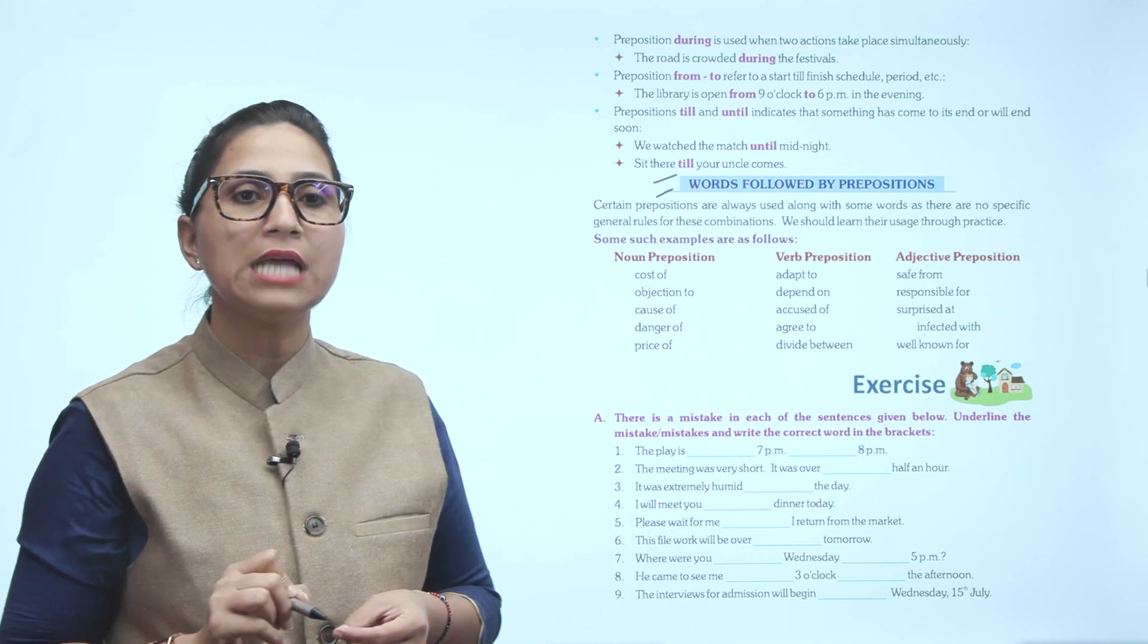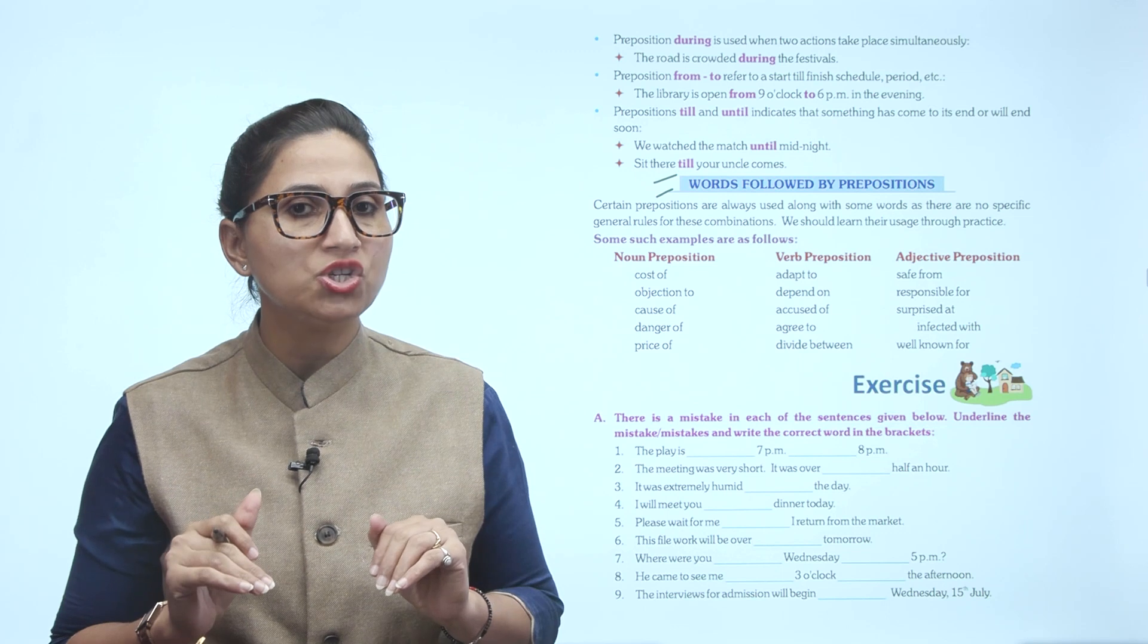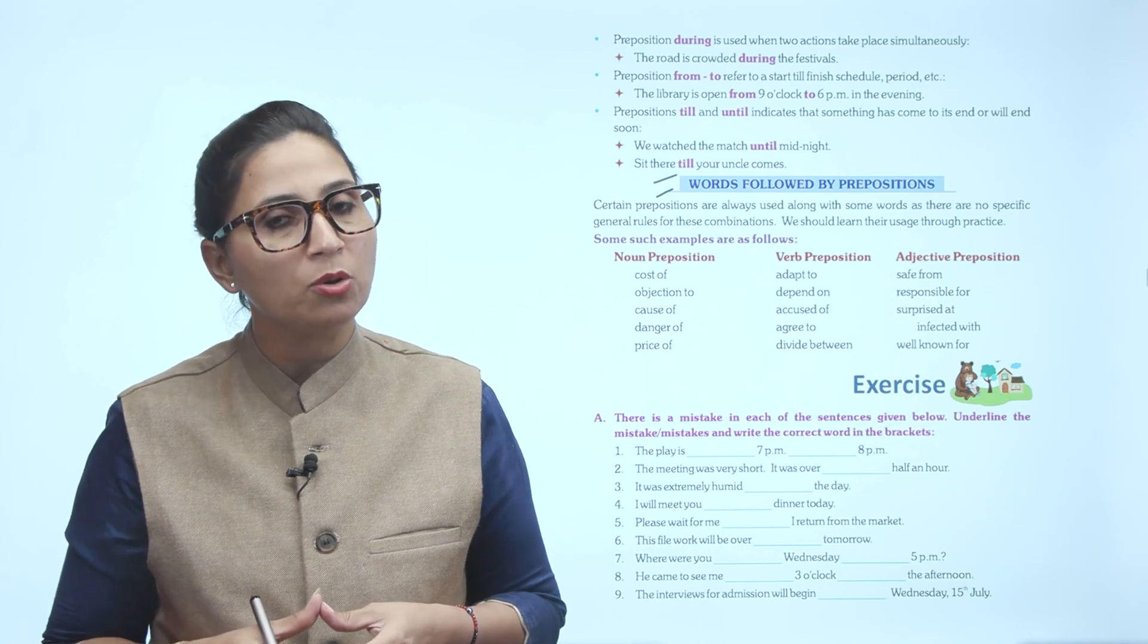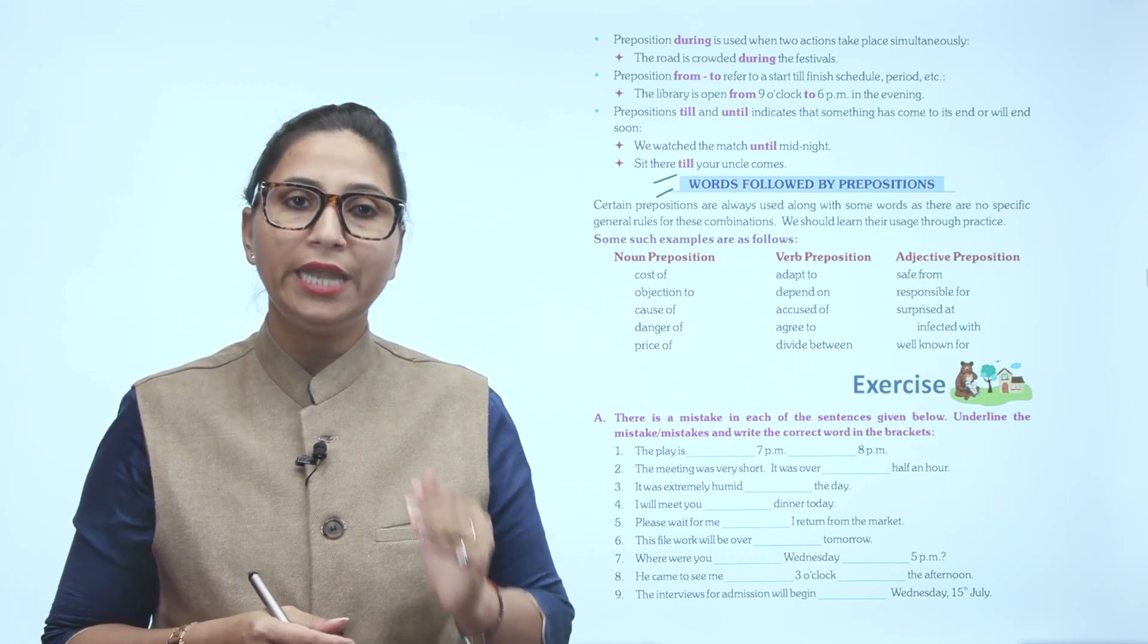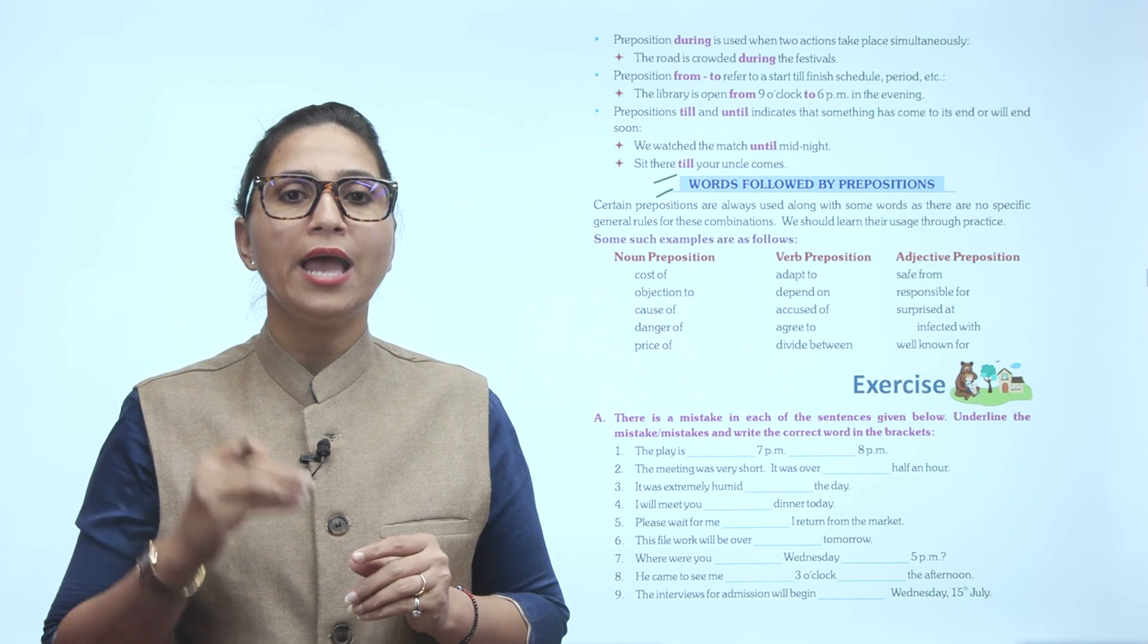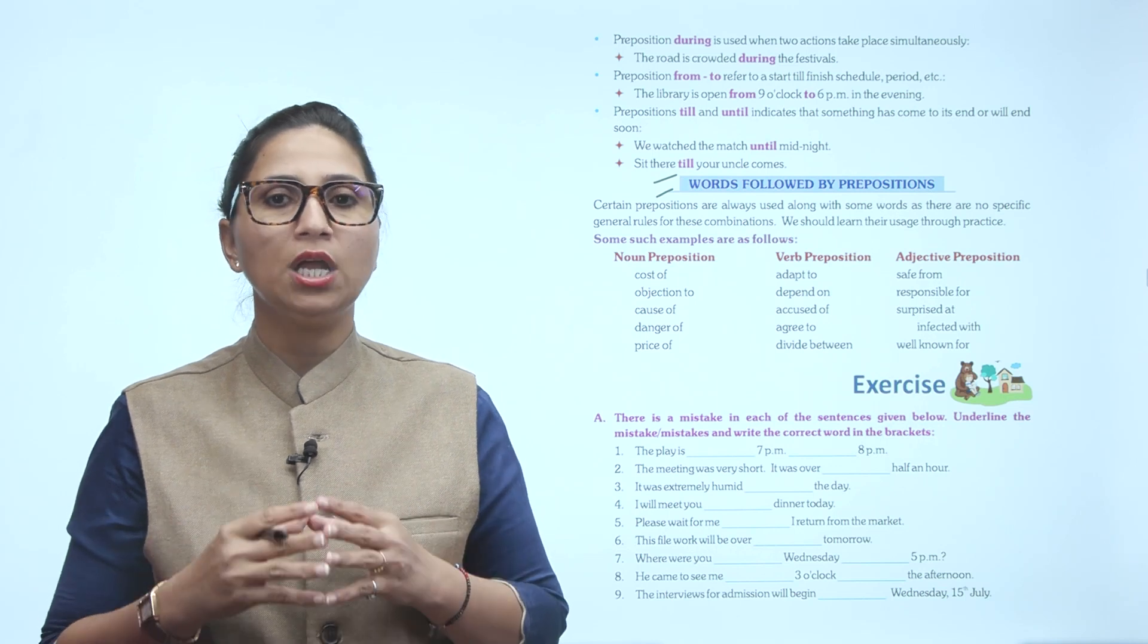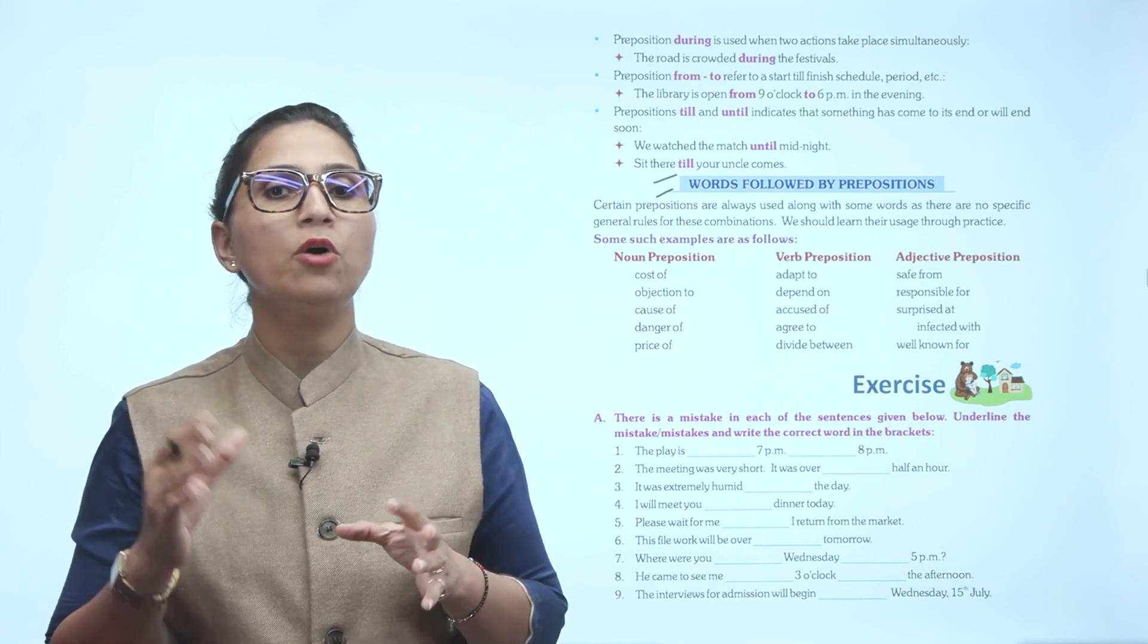Next is words followed by prepositions. Certain prepositions are always used along with some words. As there are no specific general rules for these combinations, we should learn their uses through practice. Some such examples are as follows. Noun prepositions: coast of, objection to, cause of, danger of, prize of. Verb prepositions: adapt to, depend on, accused of, agree to, divide between. Adjective prepositions: safe from, responsible for, surprised at, infected with, well-known for. Through these small examples you can easily understand and differentiate based on noun, verb or adjective.